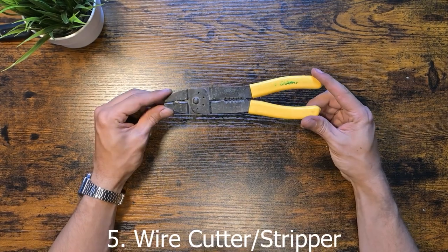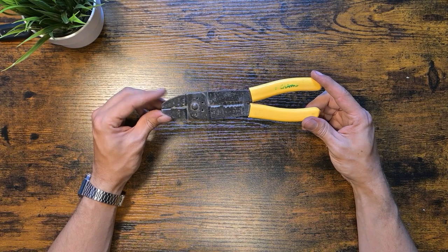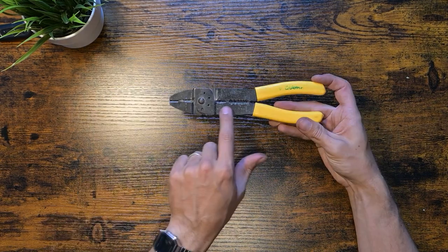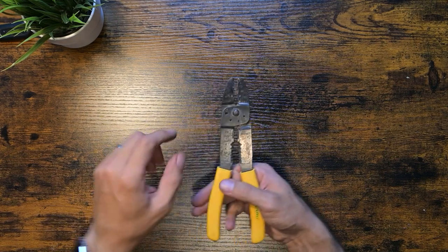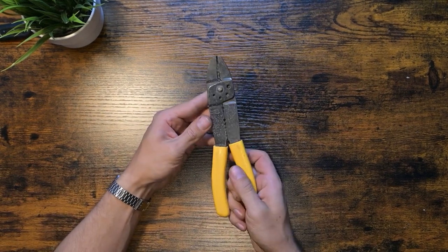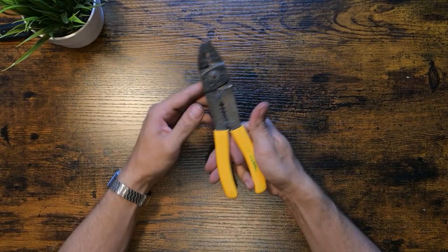For electrical or small wiring jobs, a wire cutter or a wire stripper is indispensable. I like this kind of model because it has some more features like crimping and cutting. There are different shapes and sizes. I bought mine at least 20 years ago and I still use it today.